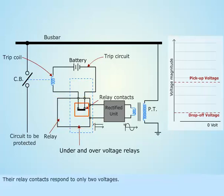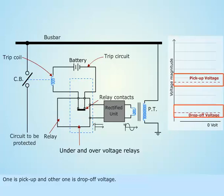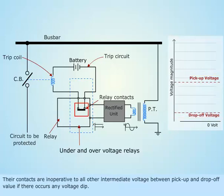Their relay contacts respond to only two voltages — one is the pickup voltage and the other is the drop-off voltage. Their contacts are inoperative to all other intermediate voltages between the pickup and drop-off value if there occurs any voltage dip.